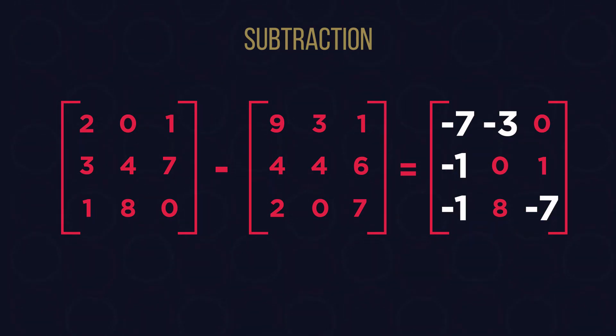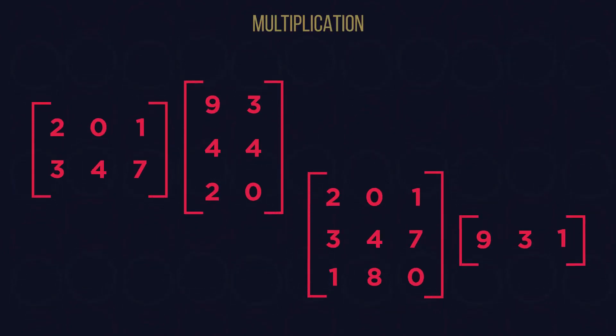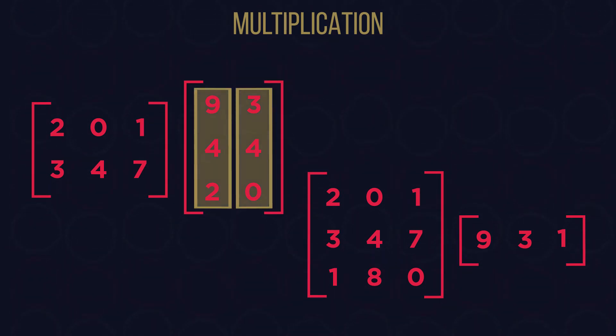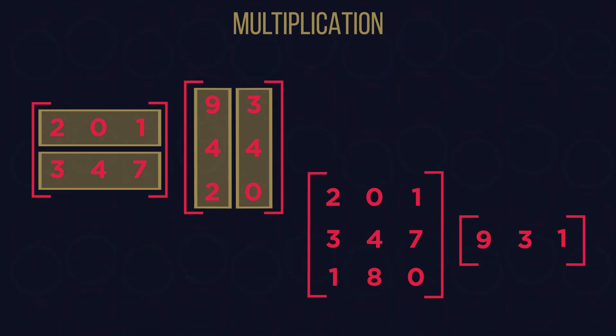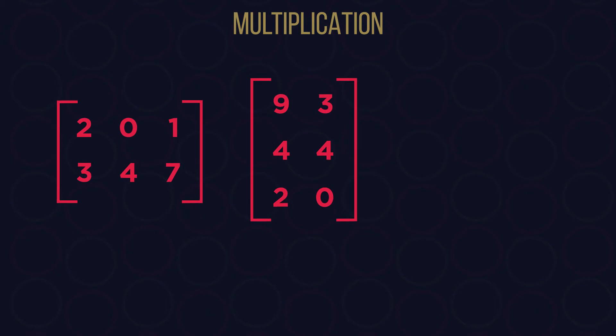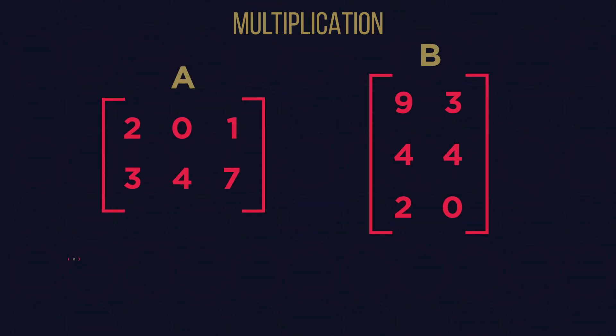The product of two matrices, on the other hand, is a little more complicated. Firstly, we can only multiply together two matrices if the number of columns of the first one is equal to the number of rows of the second one. Therefore, we can multiply together the first pair of matrices but not the second. What we then have to do is a little trickier than the rest.